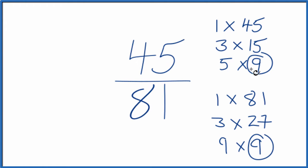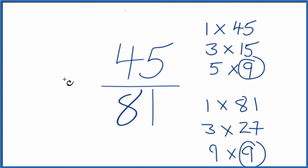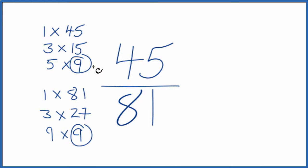So we'll divide 45 by 9, 81 by 9, and we'll have simplified the fraction 45 over 81. Let's move these over here. 45 divided by 9 gives us 5, and then 81 divided by 9 gives us 9.